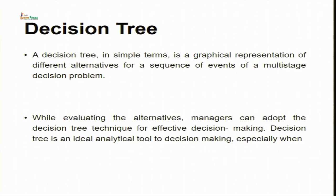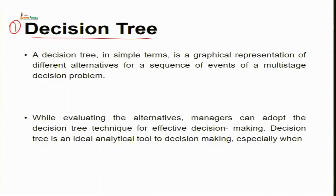Now let us look at tools for decision making. One such tool is the decision tree. In general terms, a decision tree identifies different paths or alternatives while taking a decision. We keep asking what will happen next, answering in yes or no form, until we reach a conclusive decision. A decision tree is a graphical representation of different alternatives for a sequence of events in a multi-stage decision problem, which is generally complex in nature.